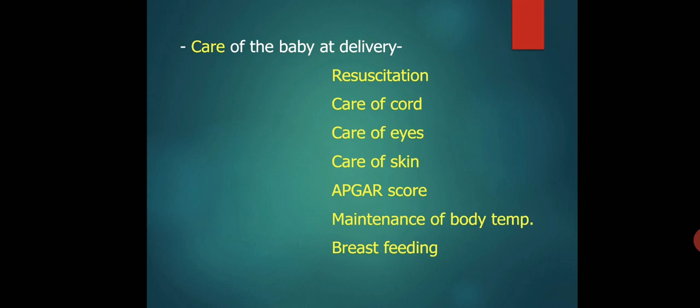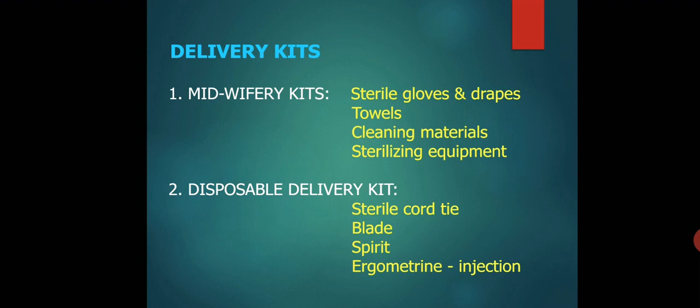Now, care of the baby at delivery: after delivery you have to follow ABC — clean the airway, check the breathing, clean the surface and clean the baby, and check circulation. So: resuscitation, care of the cord, care of the eyes, care of the skin, APGAR score, maintenance of body temperature, and breastfeeding.